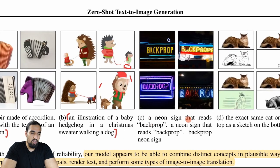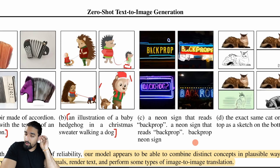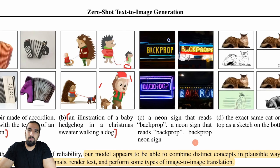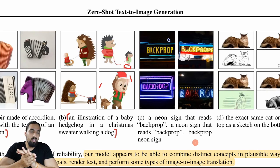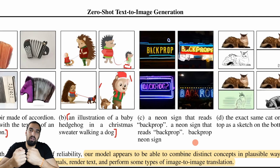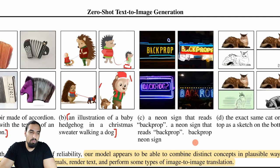Here we have a neon sign that reads 'backprop'. You can see there's a lot of prompt engineering involved — somebody on Twitter called it programming 3.0. So basically you had programming 1.0, classical software engineering, then programming 2.0 which is machine learning where your data is your program. And here you're just hacking the prompts in order to get the desired result from your model. It looks like an emerging paradigm and we'll be seeing more of this with GPT models as well.